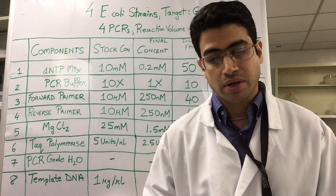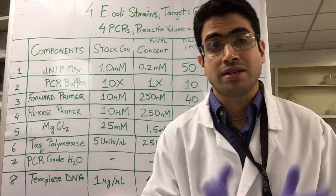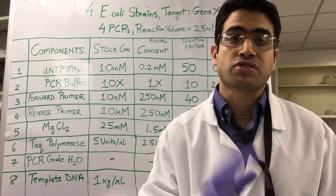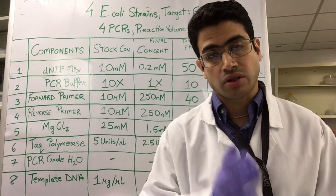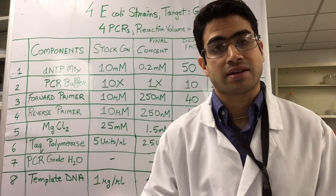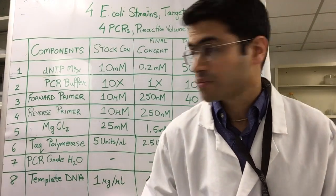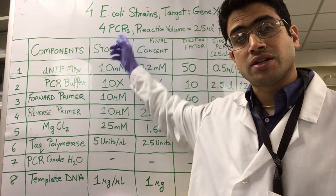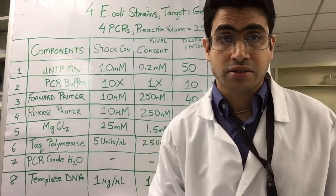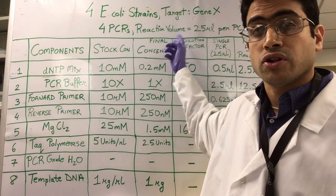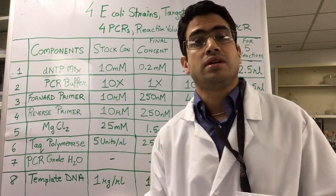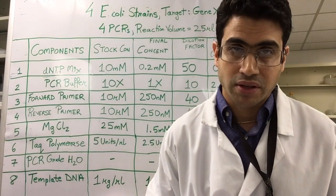So in this example, let's say that we have extracted genomic DNA from four separate strains of E. coli and we want to detect gene X in all the four strains. So we are going to set up a total of four PCRs. The reaction volume for each PCR is going to be 25 microliters.